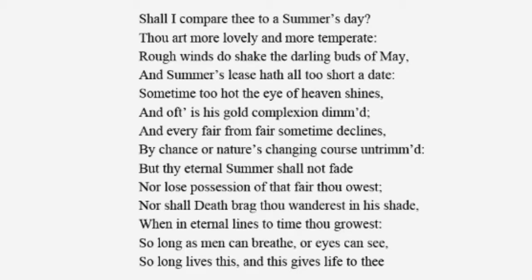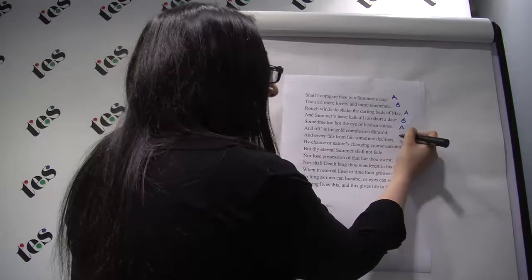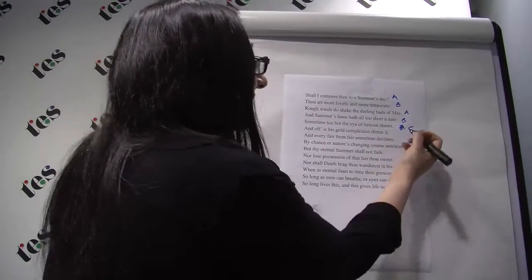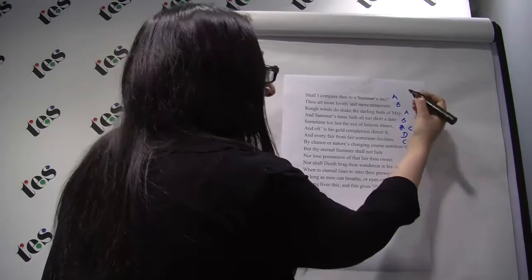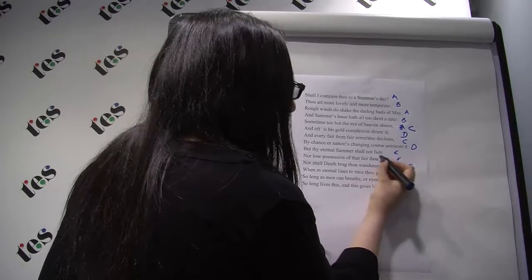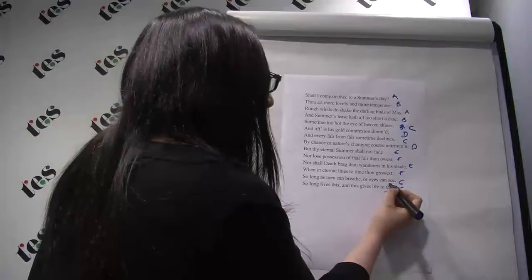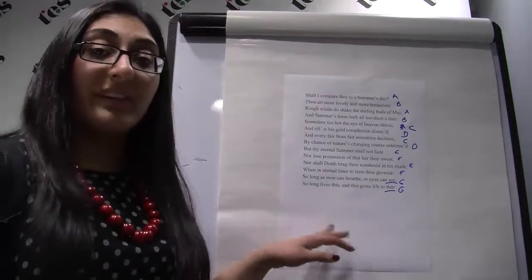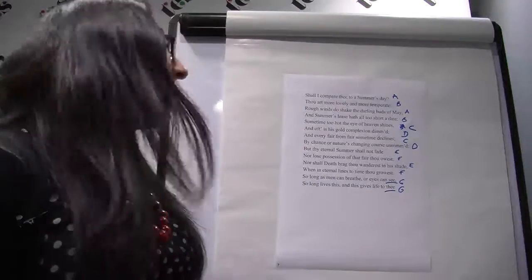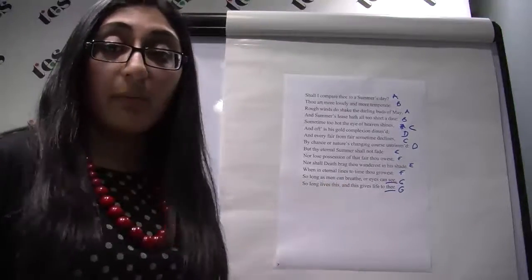Let's think about the rhyme scheme of Sonnet 18. 'Shall I compare thee to a summer's day' ends with 'day' — rhyme A; 'more temperate' — B; 'buds of May' — back to A; 'date' — B. Then C, D, C, D; E, F, E, F; and finally G, G — a nice rhyming couplet at the end. That rhyming couplet is what distinguishes an English or Shakespearean sonnet from other Italian forms. Another fundamental point: the sonnet is written in iambic pentameter. An iamb is a metrical foot of two syllables — an unstressed syllable followed by a stressed syllable — sounding like a heartbeat, like 'da-DUM.' In this sonnet: 'shall I' — da-DUM — 'compare thee' — 'compare thee to a summer's day.' Pentameter means five iambs per line.